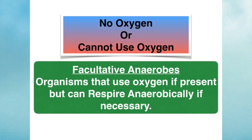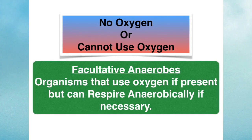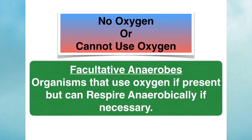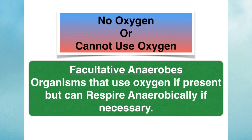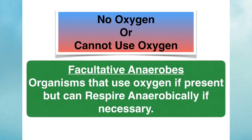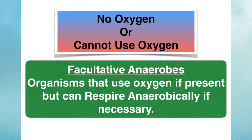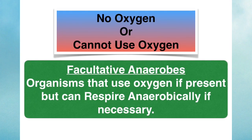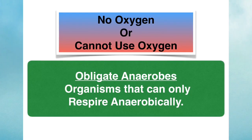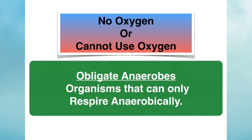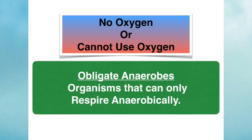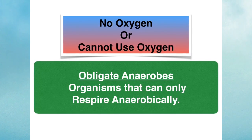Some organisms are classed as being facultative anaerobes. If there's oxygen available they'll respire aerobically, however if there is no oxygen then they can switch to anaerobic respiration. There are also obligate anaerobes — those organisms that can only respire anaerobically. Think of 'O' for zero, zero oxygen.